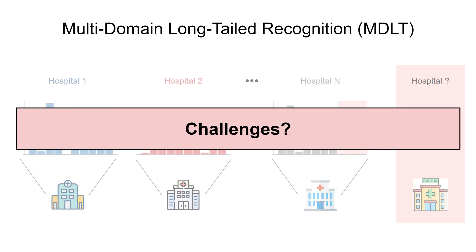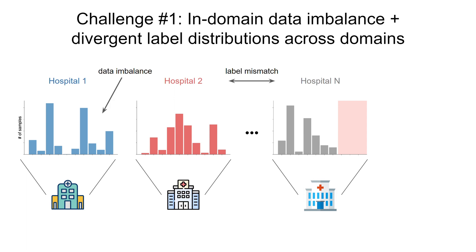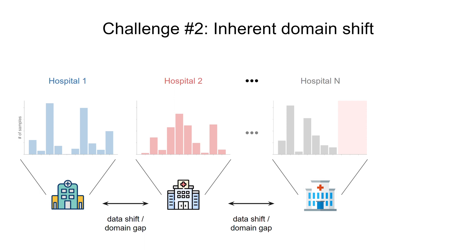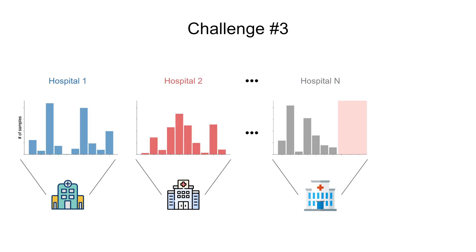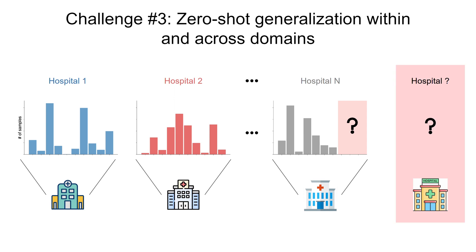But what are the key challenges when extending data imbalance to multiple domains? First, given a multi-domain imbalance dataset, by definition, we have both in-domain data imbalance as well as divergent label distributions across domains, because the label imbalance can be totally different across different domains. Moreover, when talking about data from multiple domains, we naturally need to tackle the inherent gaps and data shifts across domains — this is the second challenge. Finally, certain domains may have no data at all for certain classes, and we also need to generalize to unseen domains, rendering a third challenge of zero-shot generalization within and across domains.